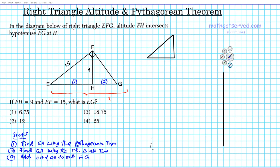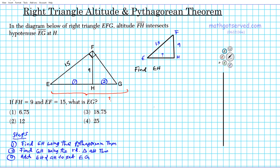Let's get started with step one, which is to find the length of EH. I've drawn triangle EHF here — this side FH is nine units long and EF is fifteen units long. We want to find EH, so we're going to use the Pythagorean theorem.